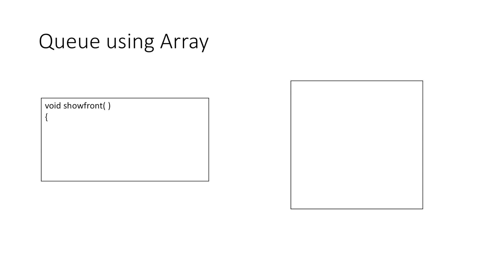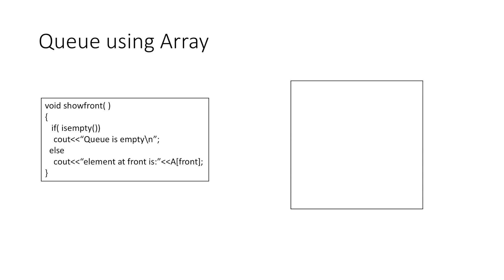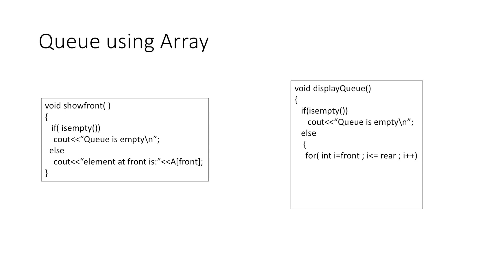Now let's create the showFront function which displays the element at front. If the queue does not have any elements we simply say the queue is empty, else we display the element at front. Now let's create the displayQueue function which displays all elements. Again we check if the queue is empty, else we start a for loop from front to rear and display the element at every index.